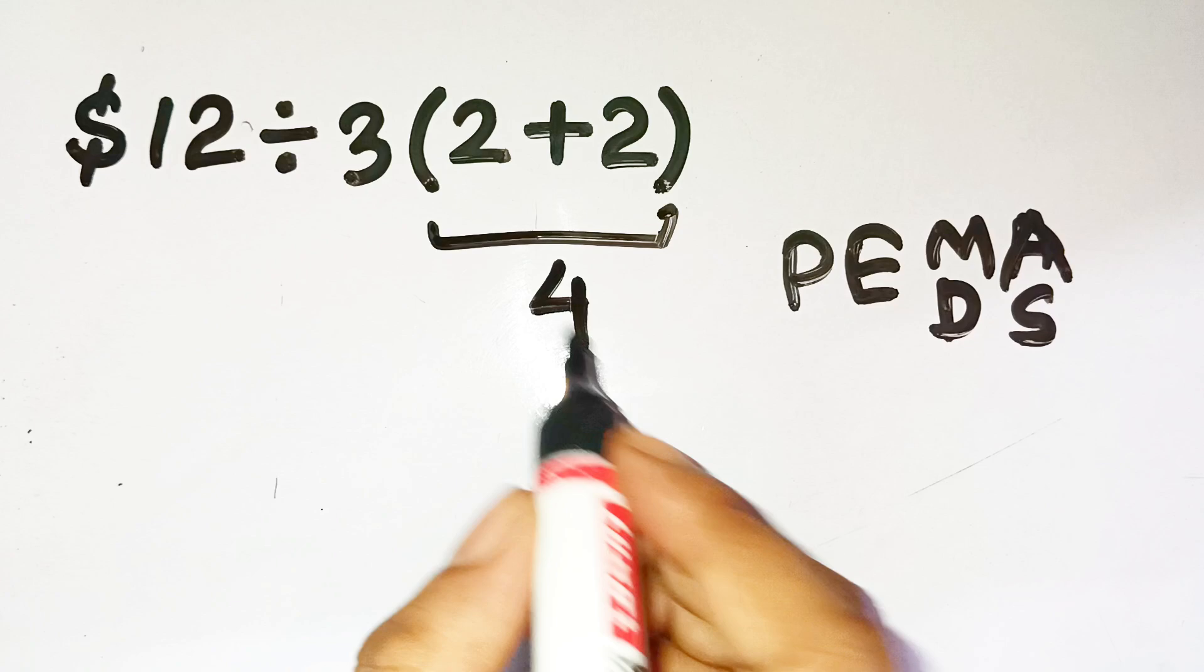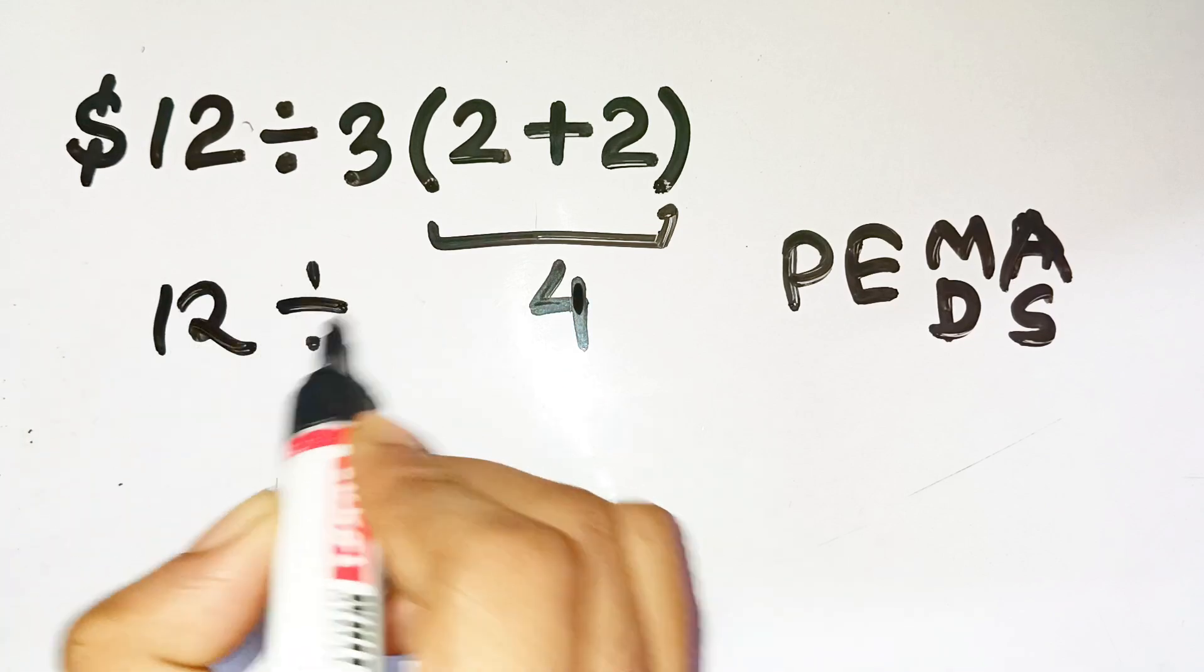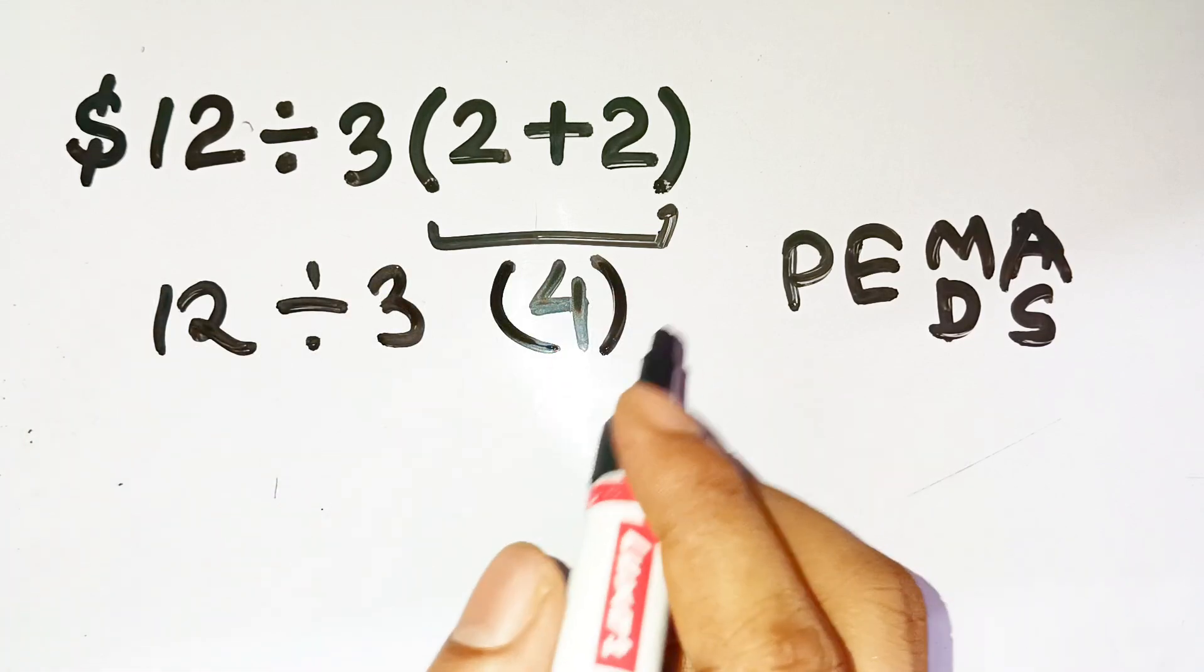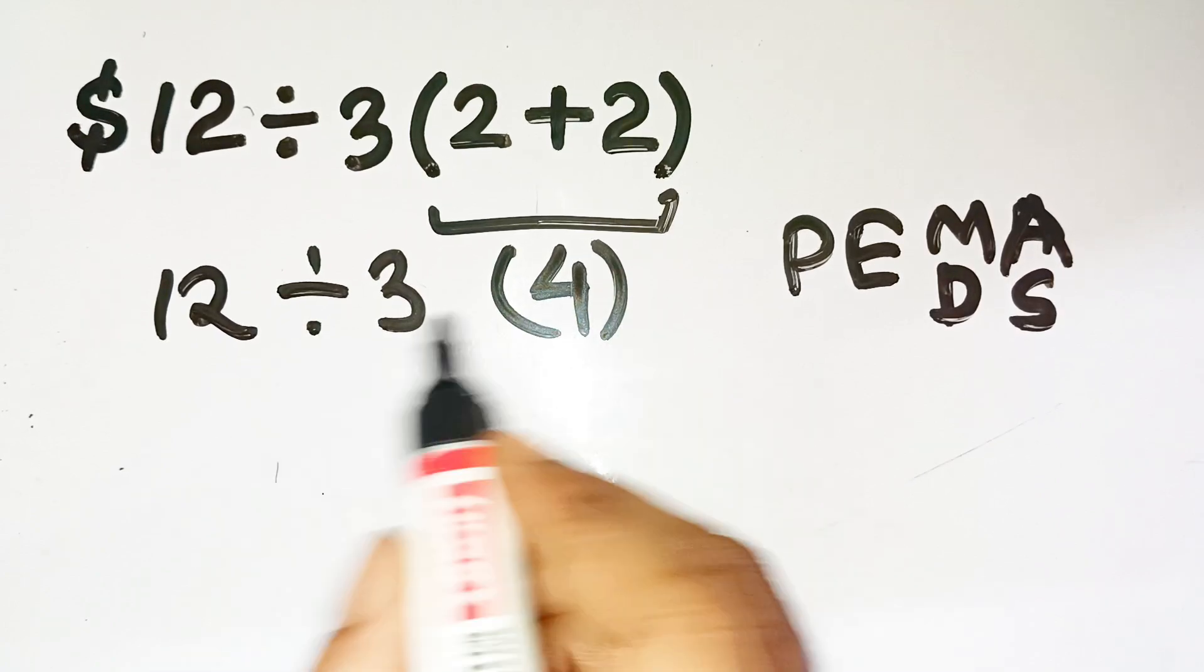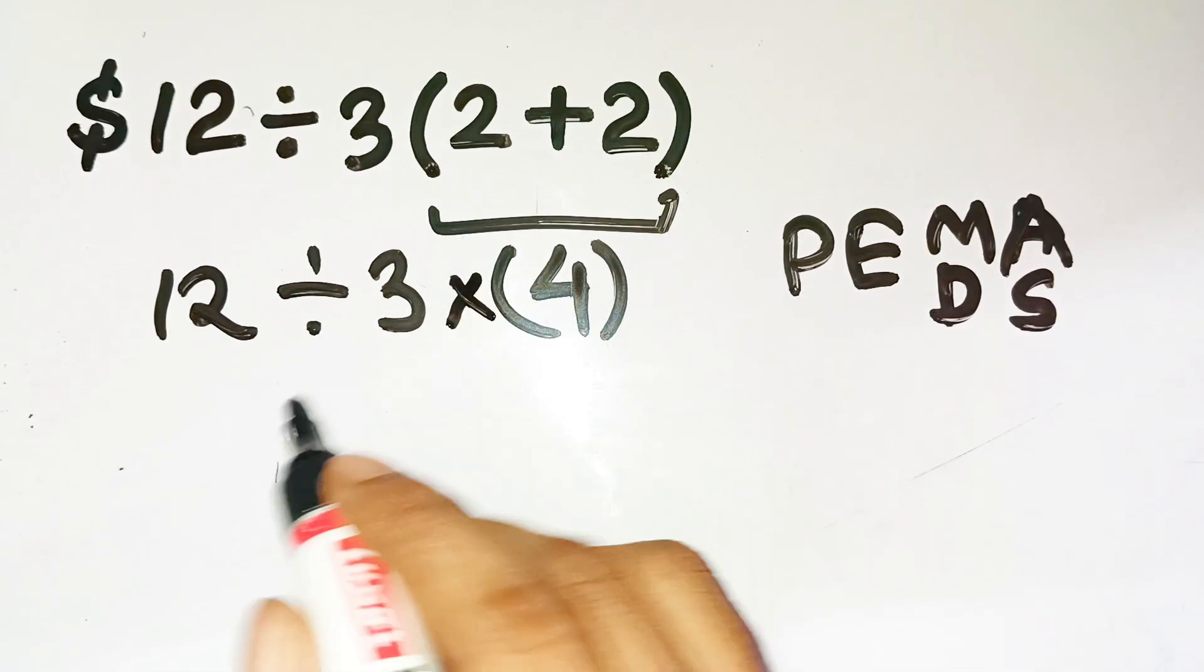Now we're left with $12 divided by 3, open parentheses, 4, close parentheses. Here's what happens next. Most people see that 3 and 4 side by side and think it means multiply first. But that's not what PEMDAS says.